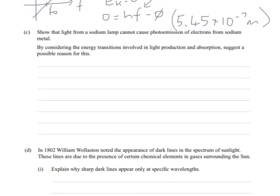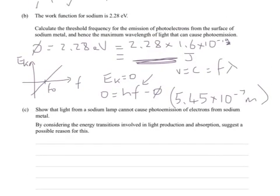Part C. Show that the light from a sodium lamp cannot cause photoemission of electrons from sodium metal. By considering the energy transitions involved in light production and absorption suggest a possible reason for this. So we can look at the wavelength of light for the threshold frequency, which is 545 nanometers.